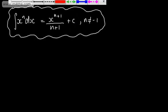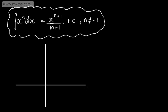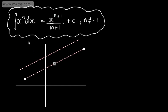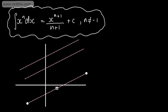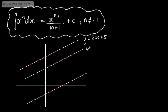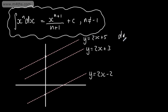So why do we add this constant of integration? Let me draw three basic parallel linear functions. This one is y equals 2x plus 5, this one is y equals 2x plus 3, and this one is y equals 2x minus 2. They have the same gradient — they just have a different y-intercept. If y equals 2x plus 5, then dy/dx, the gradient function, is simply 2.